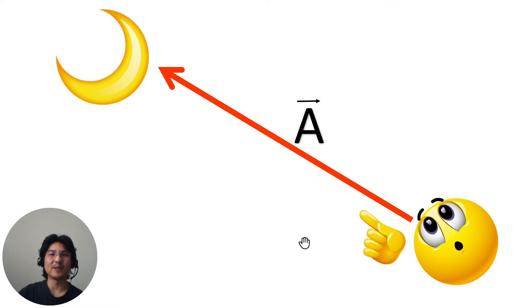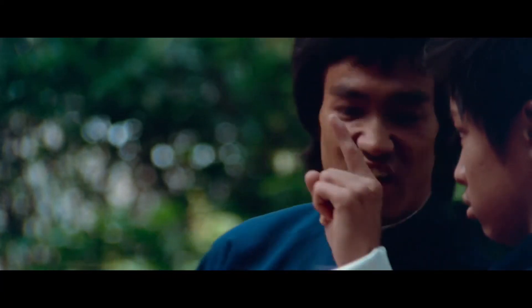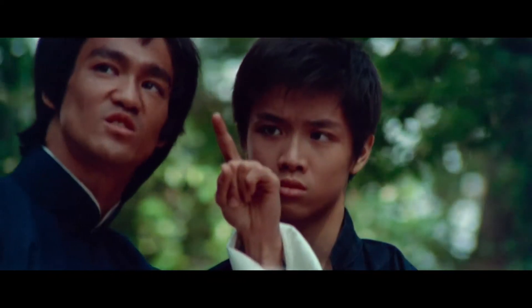And vectors have both magnitude and direction. So the magnitude in this case is the distance to the moon, and the direction you can indicate by what is called a unit vector. It is like a finger pointing away to the moon.